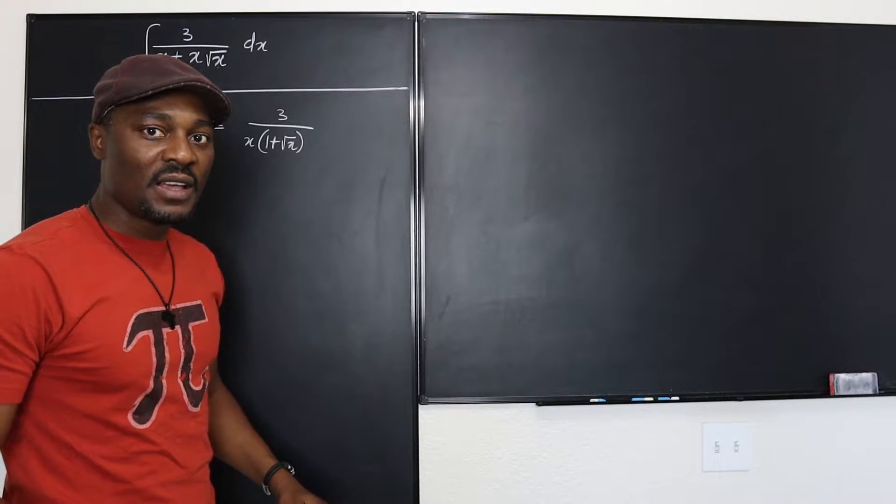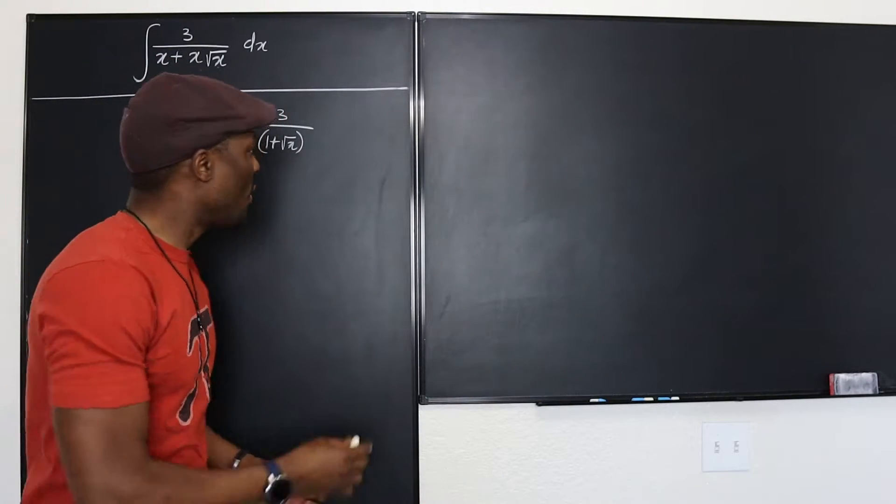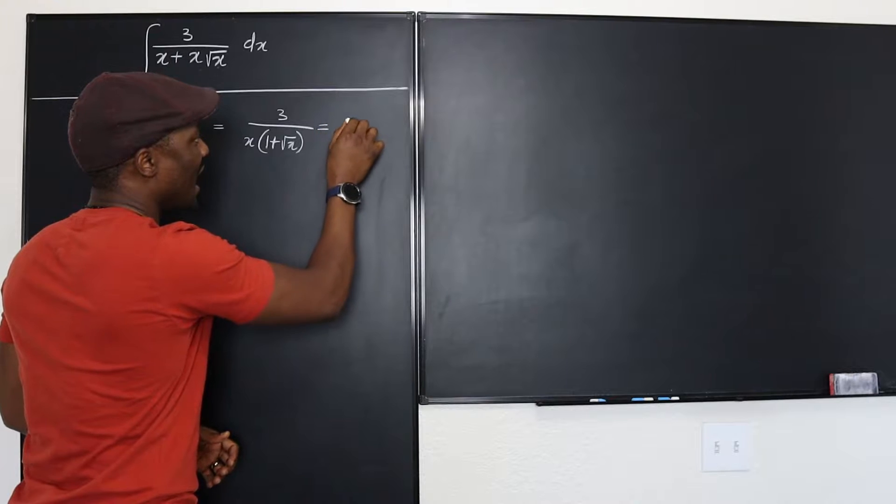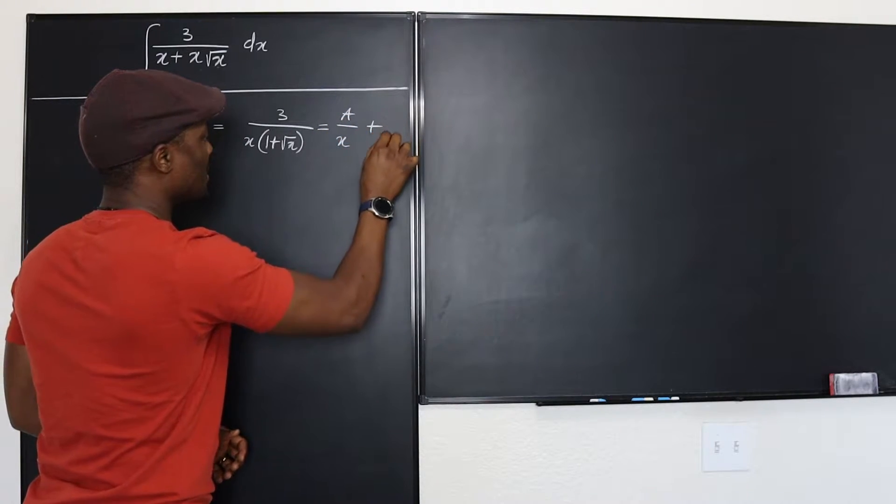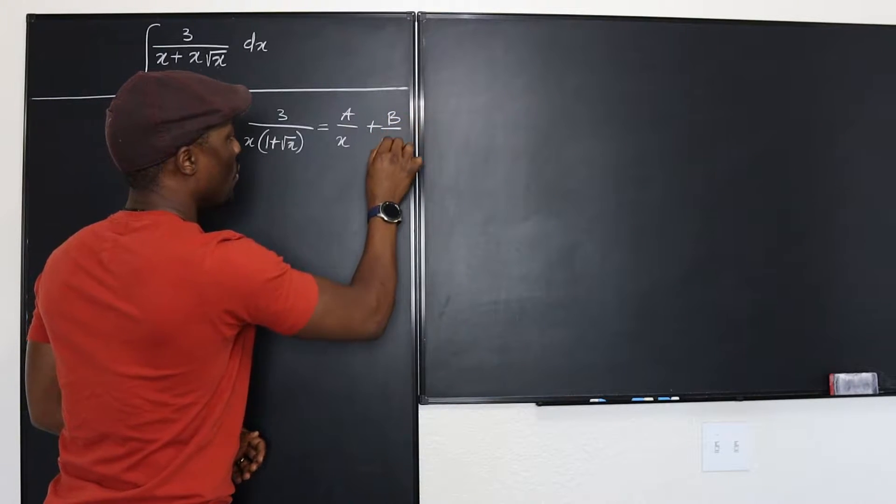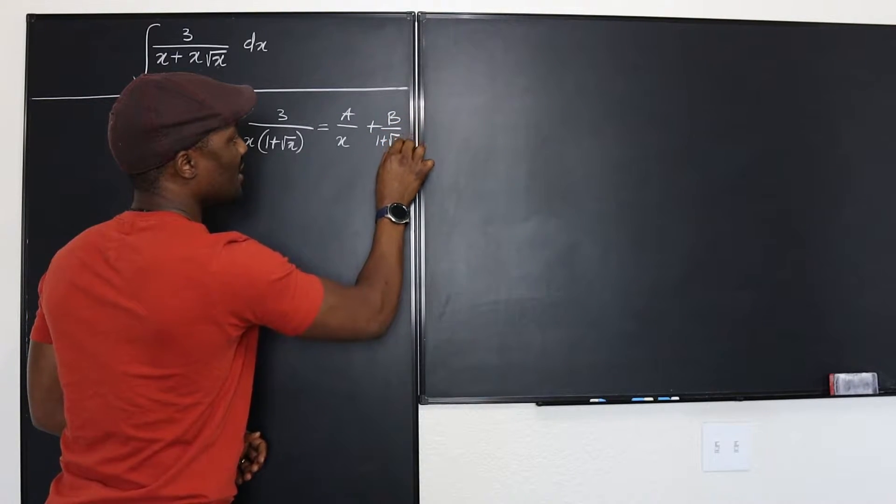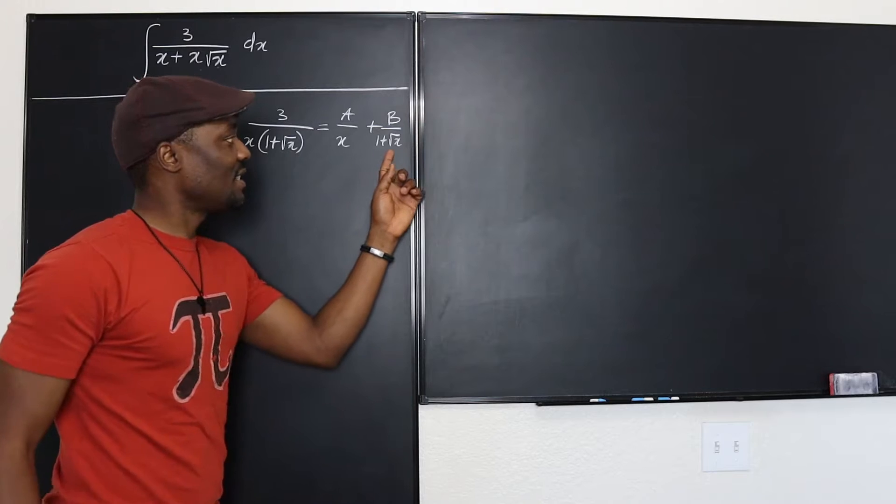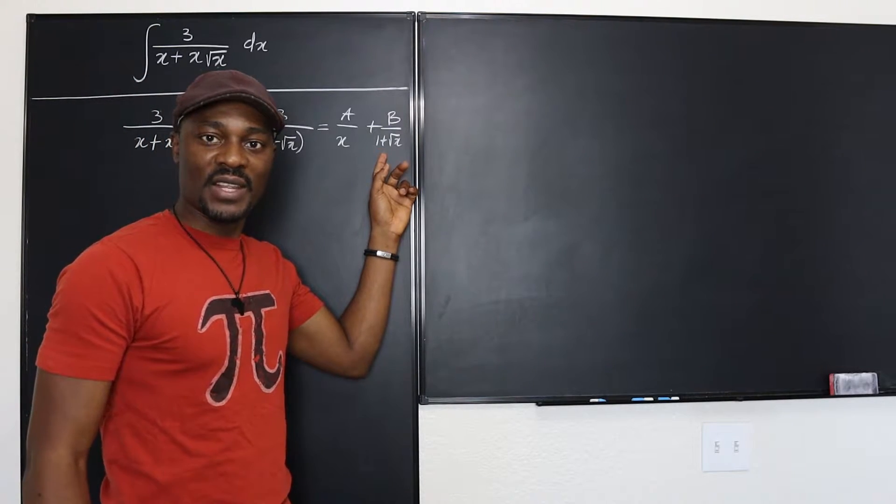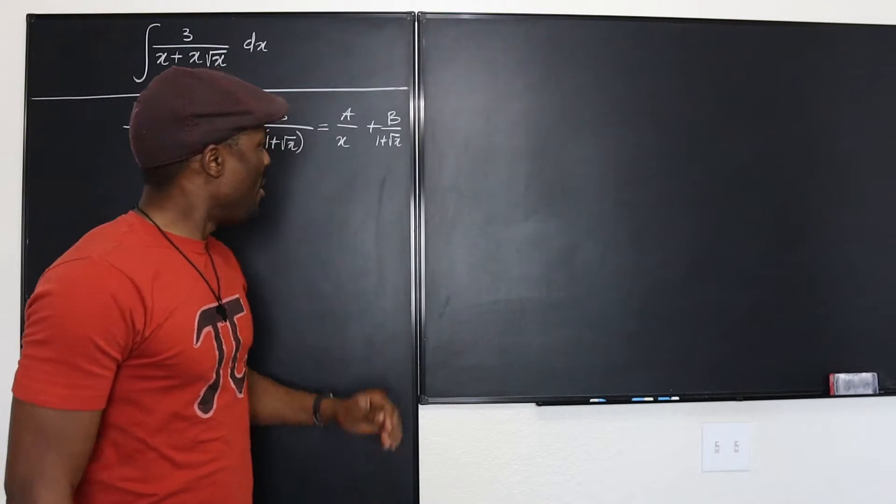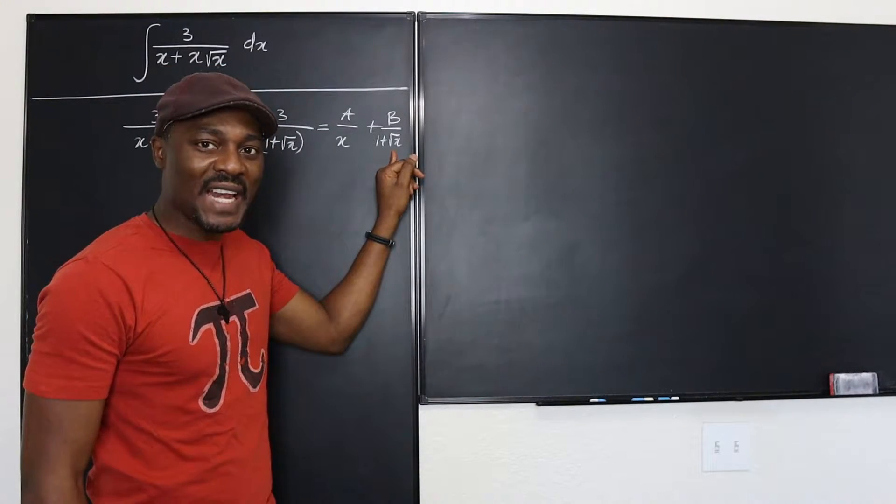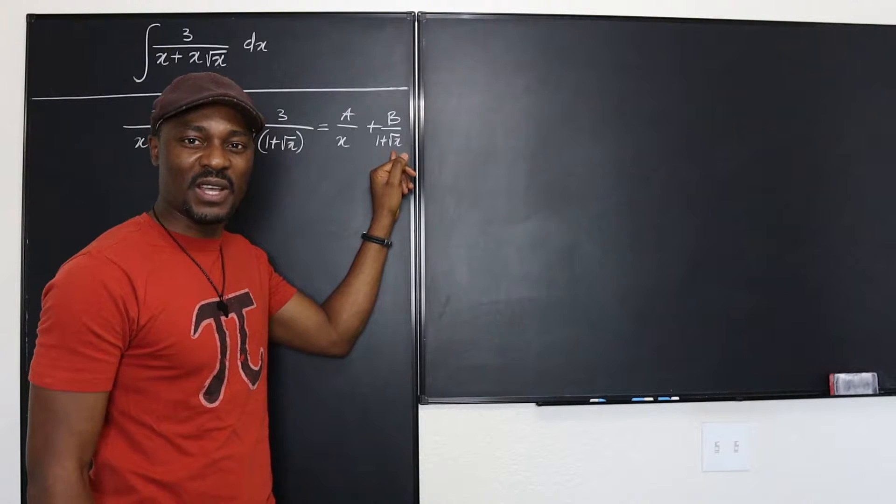I will rewrite this as A over x plus B over 1 plus square root of x. Well this is not a polynomial function, so this is not going to work. But can I change this so that it doesn't look like a square root of stuff?